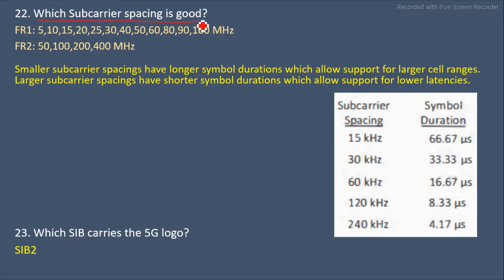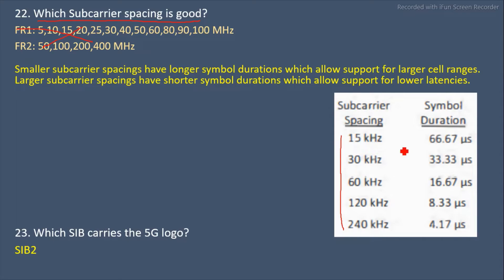Next question: Which subcarrier spacing is good? In 5G we use multiple subcarrier spacings: 15 kHz, 30 kHz, 60 kHz, 120 kHz, and 240 kHz. Each subcarrier spacing has its own symbol duration. For 15 kHz the symbol duration is 66.67 microseconds, and for 30 kHz it is 33.33 microseconds.